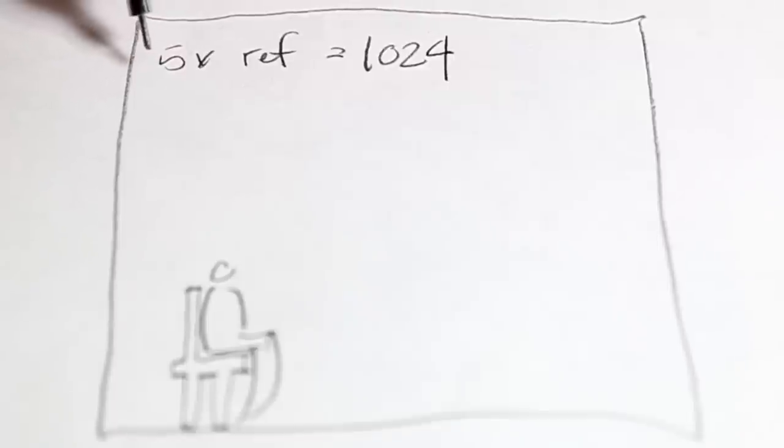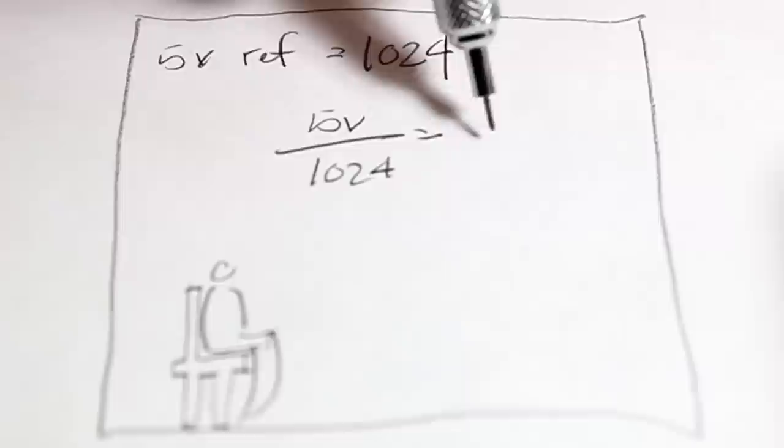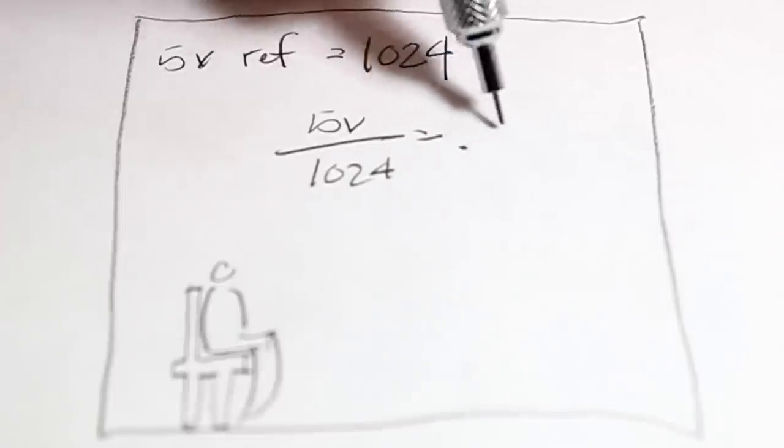If Mrs. ADC was in 10-bit mode, then a 5-volt reference would be equal to 1024, or she would give you back 1024 chips. So, the precision would be 5 volts over 1024, which would be equal to 0.0049.